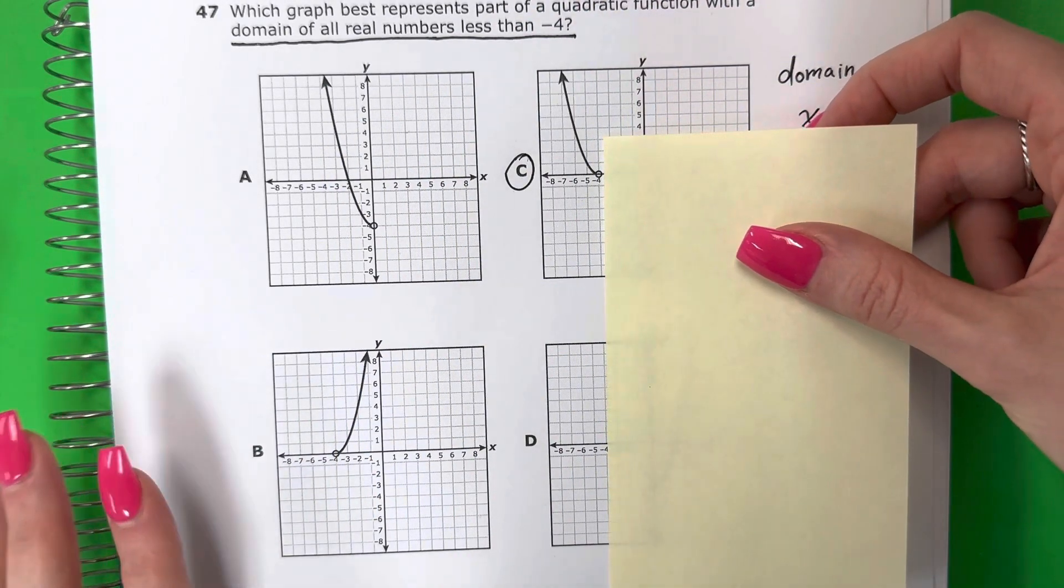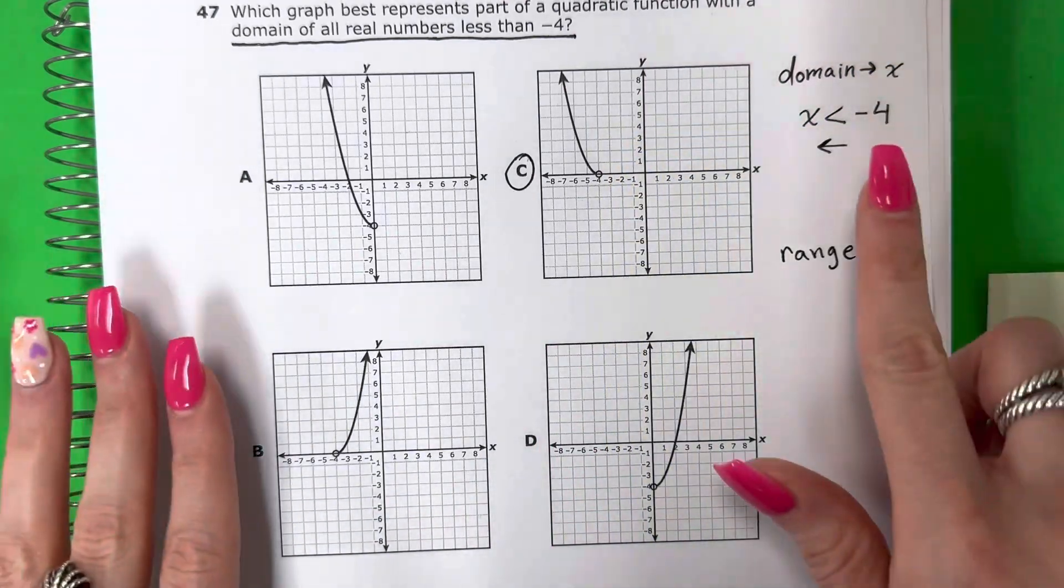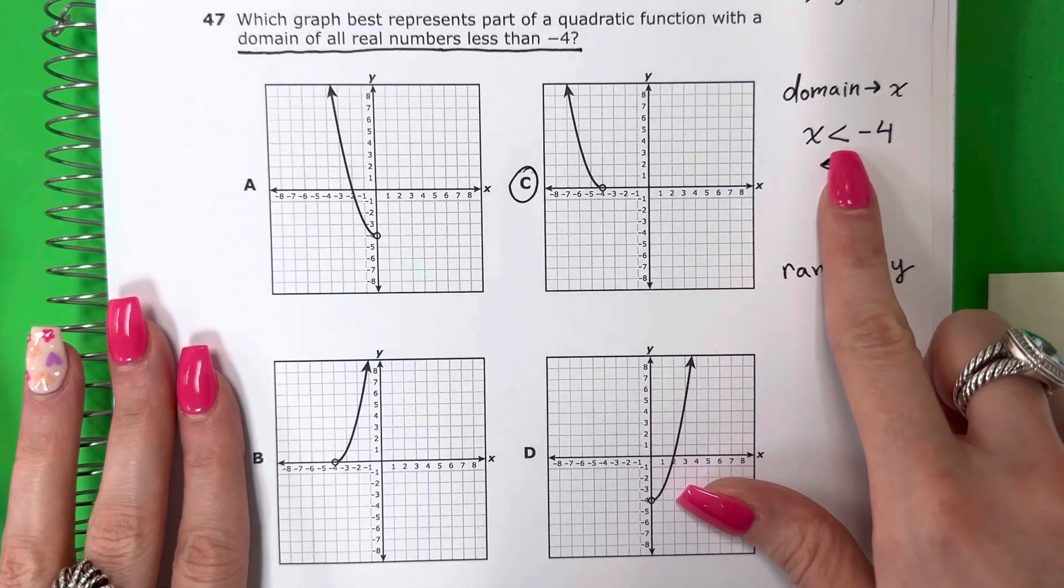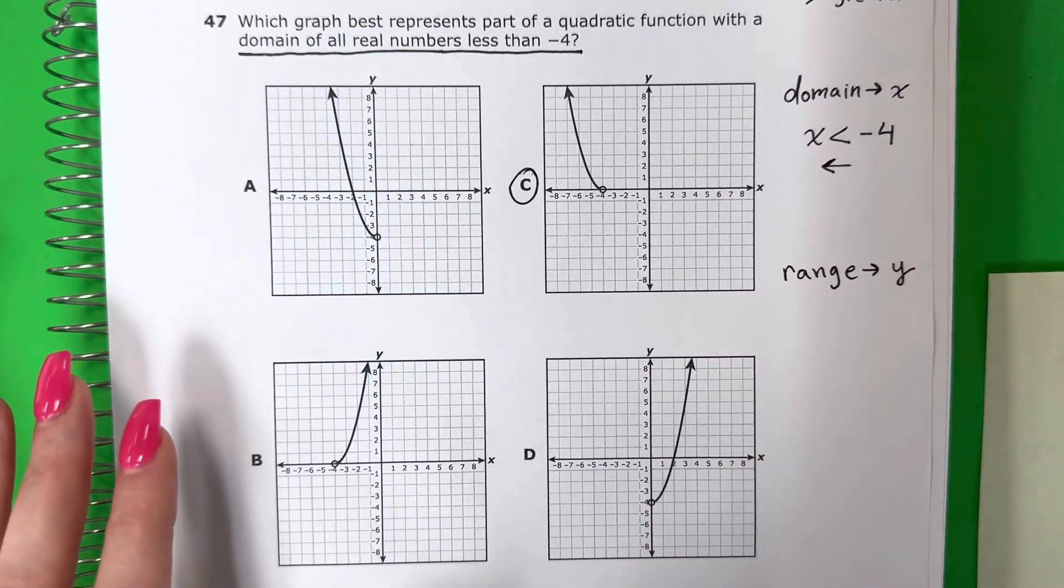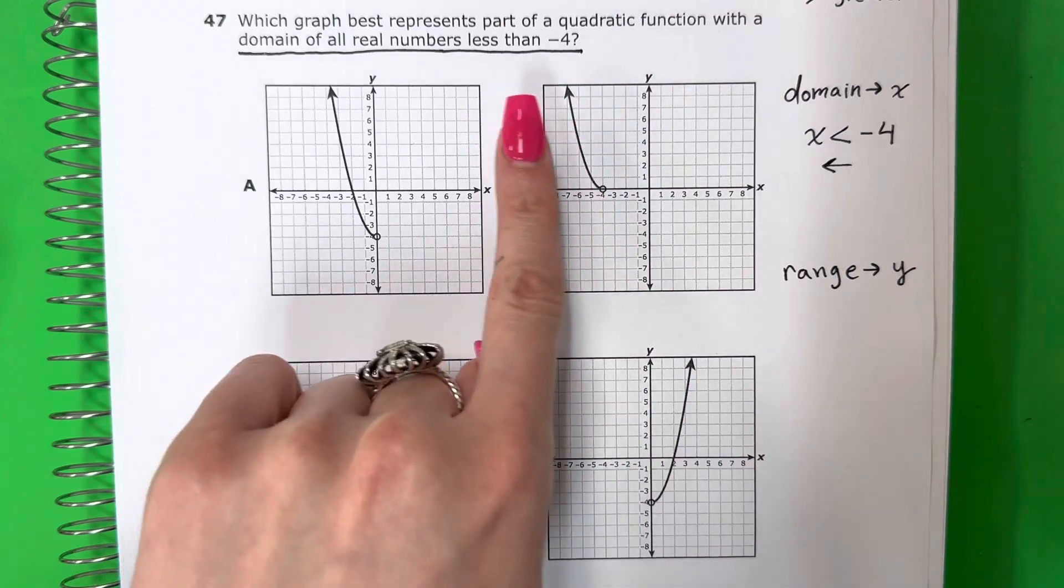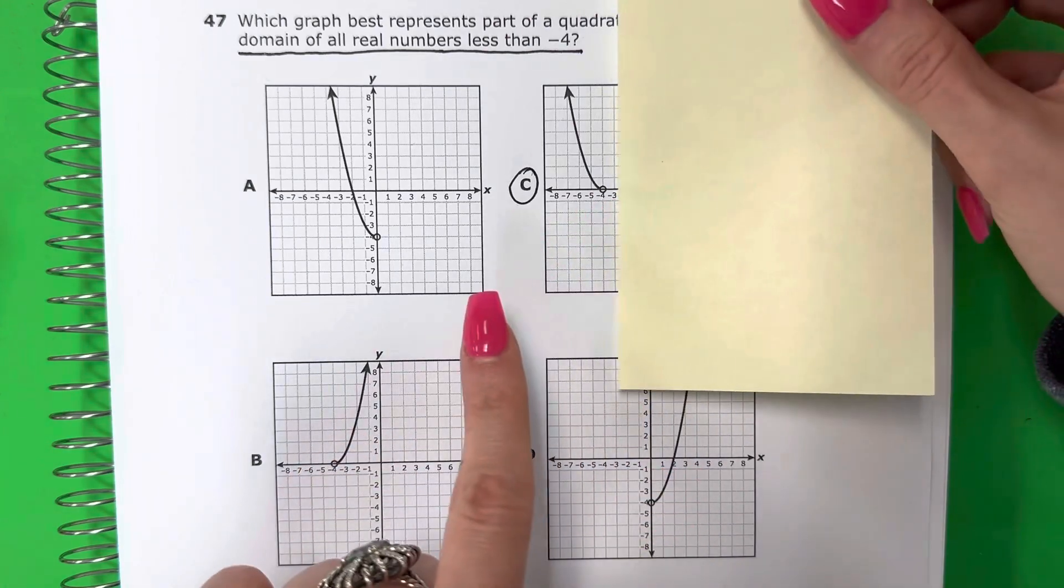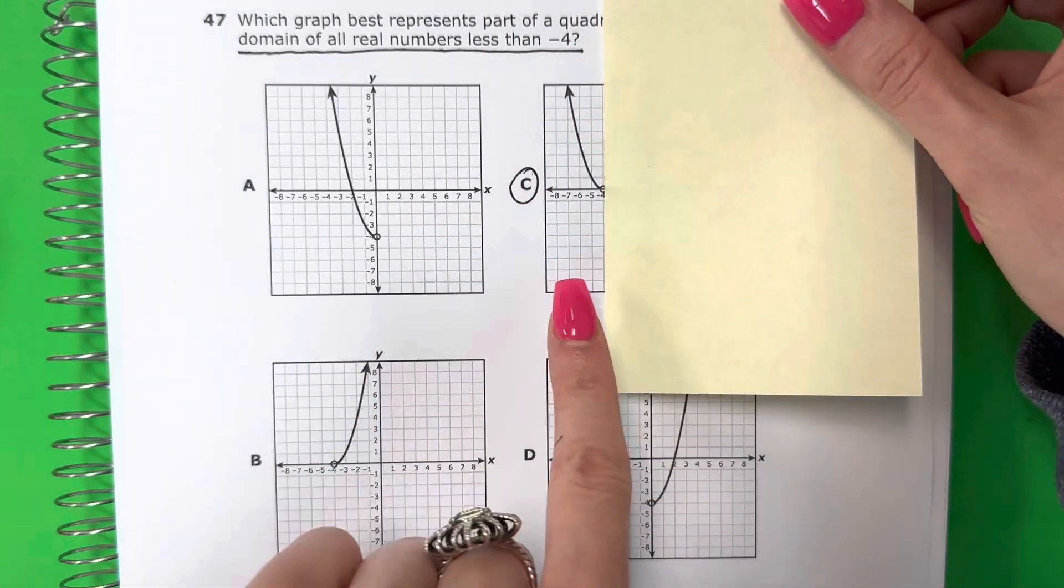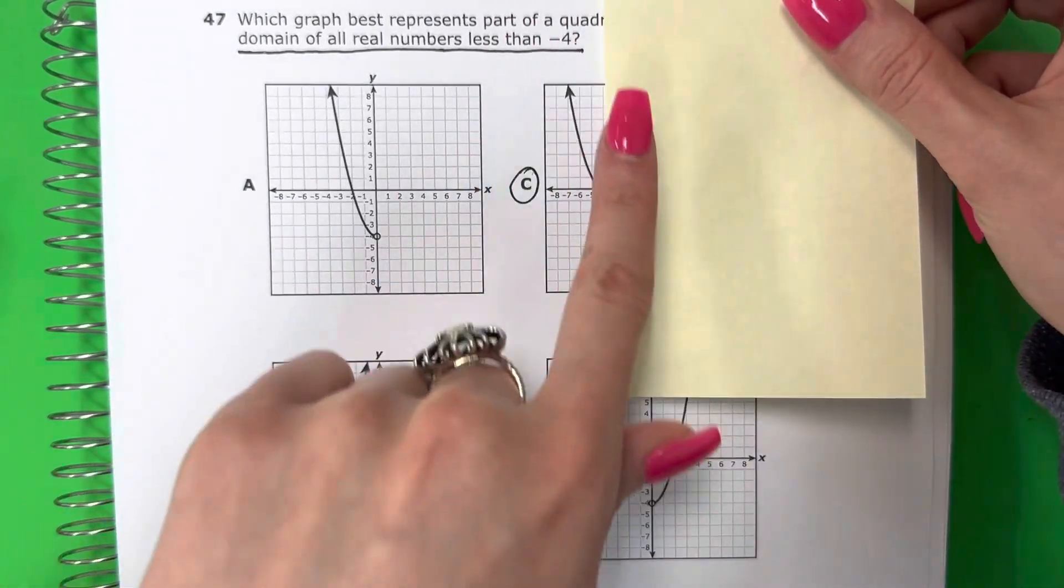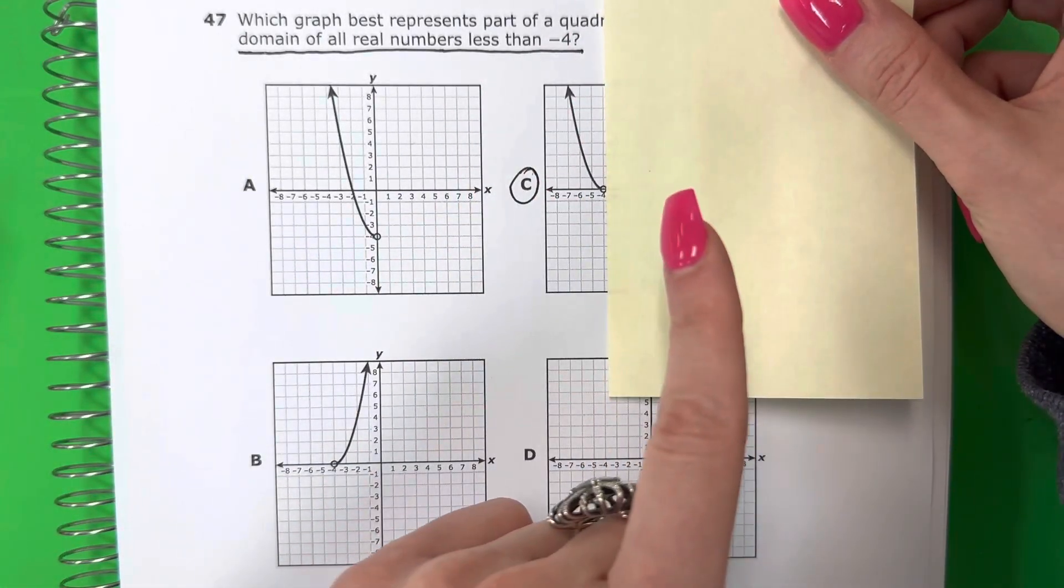And then again, negative 4. So one more time, otra vez. If x is less than negative 4, si x es menor que negativo 4, remember the less are on the left. Los menores están a la izquierda. So on x negative 4, I only want what is on the left. Solo quiero que esta a la izquierda. The small, los menores. And nothing on the right. Y nada a la derecha.